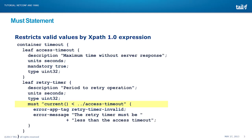So, we see an example of must on this slide where we have an access timeout and a retry timer. The retry timer has a constraint in our application that its values must be less than the value that has been set into access timeout. This is a semantic constraint — it's a relationship between data. In the past, prior to Yang, we simply had to put this sort of constraint in our documentation and down in our software, but there was no way to express it just in a data model that someone could look at or a machine could process and understand the constraints. Must gives us that.